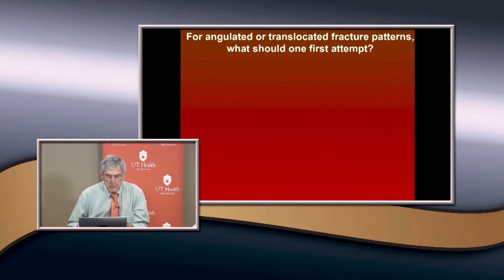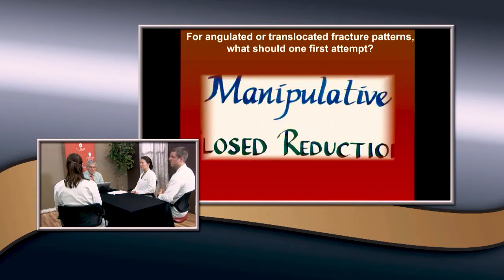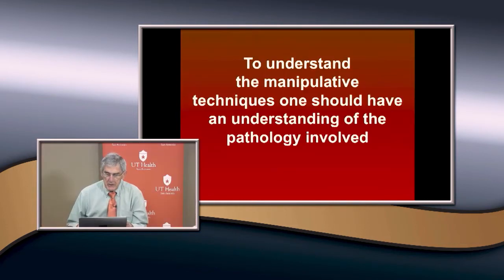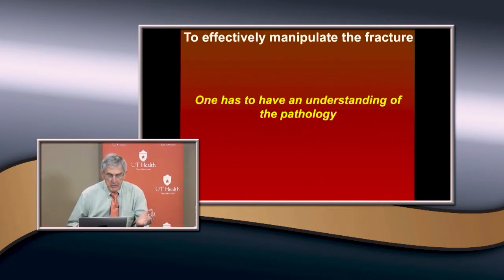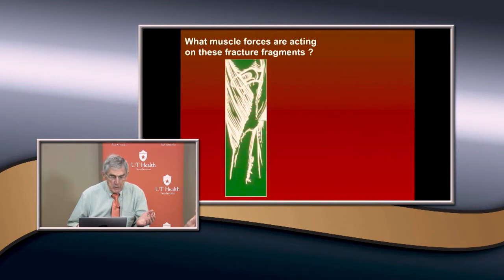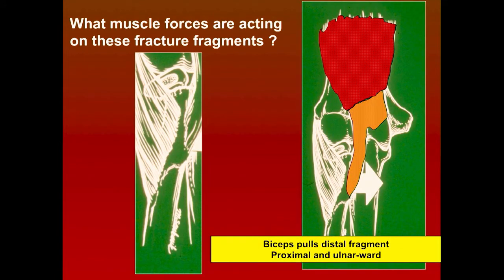For angulated or translocated fractures, you try closed reduction first. To understand the manipulation techniques, you need to understand the pathology — the displacement is dependent upon the forces and the muscles attached to the distal fragment. The biceps pulls it proximal and ulnarward, and the supinator pulls it as well. This is the pathology you're dealing with.